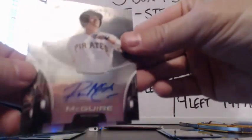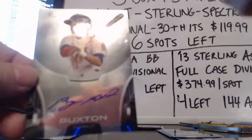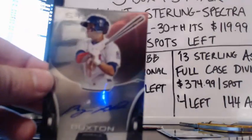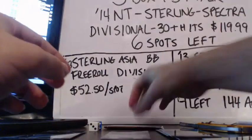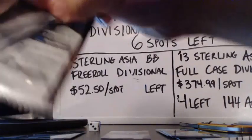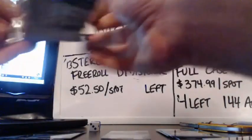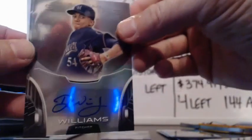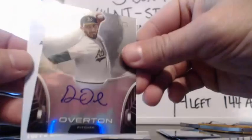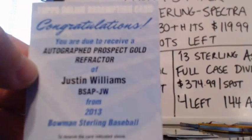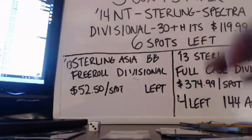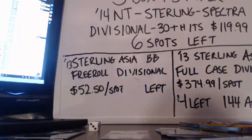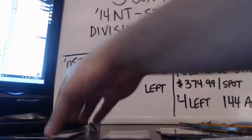Reese McGuire for the Pirates. Ryan McMahon for the Rockies. And for the Twins, Ben M. gets Byron Buxton. Last pack: a redemption. Zoilo Almonte for the Yankees. Devin Williams for the Brewers. Dylan Overton. And a gold refractor Justin Williams for the D-backs and Andy V.